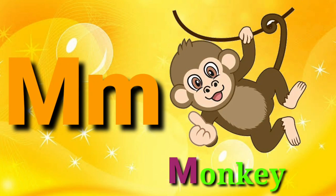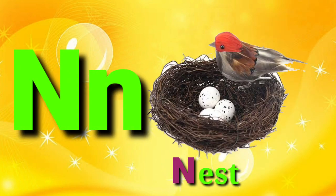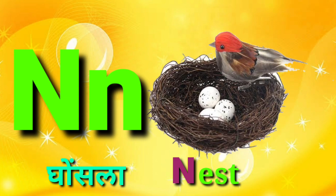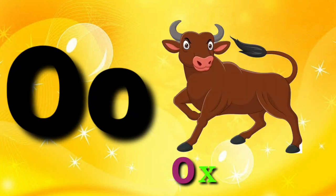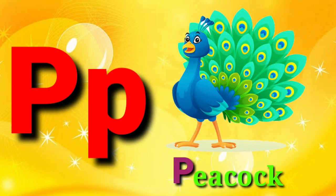M for Monkey, Monkey means Bandar. N for Nest, Nest means Ghosla. O for Ox, Ox means Bail. P for Peacock, Peacock means Moor.